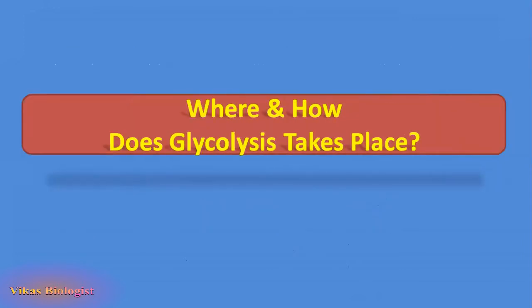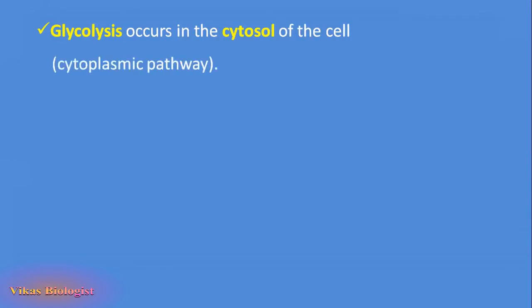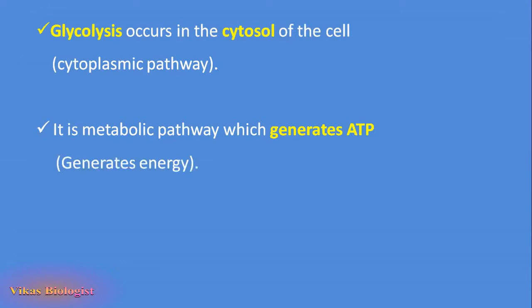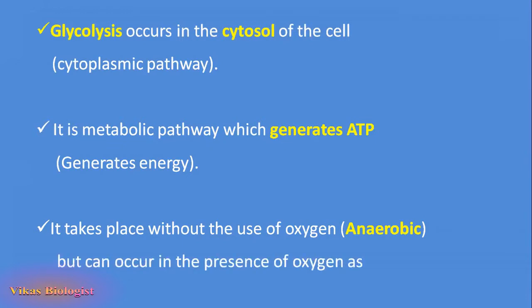Where and how does glycolysis take place? Glycolysis occurs in the cytosol of the cell, in the cytoplasm, and hence it is called a cytoplasmic pathway. It is a metabolic pathway which results in generation of ATP and is called the energy generating pathway. It takes place without the use of oxygen and hence is anaerobic, but can also occur in presence of oxygen as well.